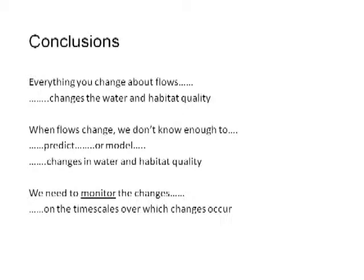I think it's best to start with my conclusions so you know where I'm headed. You've seen a lot about prospective changes to flows. Everything about those changes affects water and habitat quality. I submit that we don't know enough to predict, project, or model changes in water and habitat quality when we're talking about aquatic pelagic habitat. We're not even sure about what we want out there. So I would submit that we need to monitor these changes on the timescales over which they occur, which is the tricky part of this business.